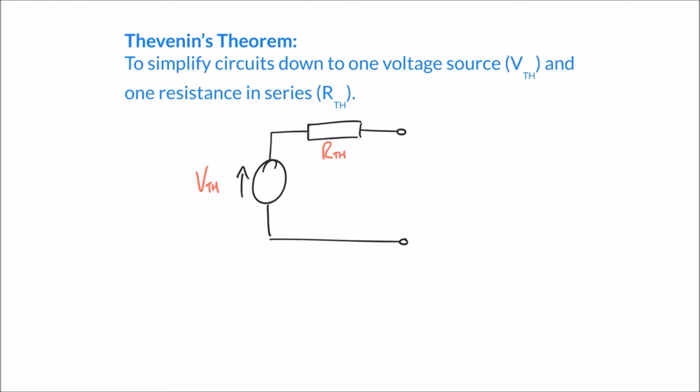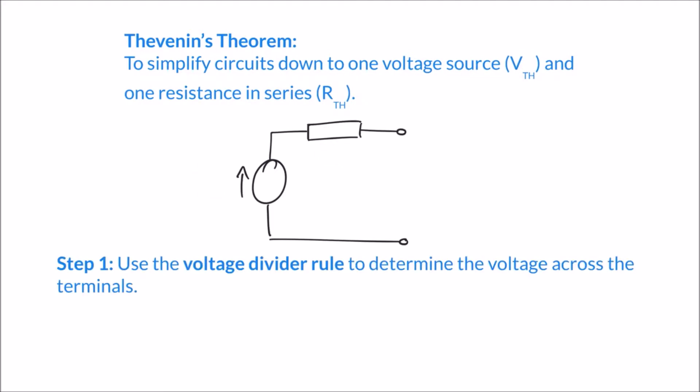We're going to follow three steps which will allow us to simplify different examples down to just these two components — this Thevenin equivalent circuit. The first step is to use the voltage divider rule, which we covered in a previous video, to determine the voltage across the terminals — those two output terminals on the right hand side. If you're not familiar with the voltage divider rule, I'd recommend going back to that video, as we're going to use it a lot over the next few videos.